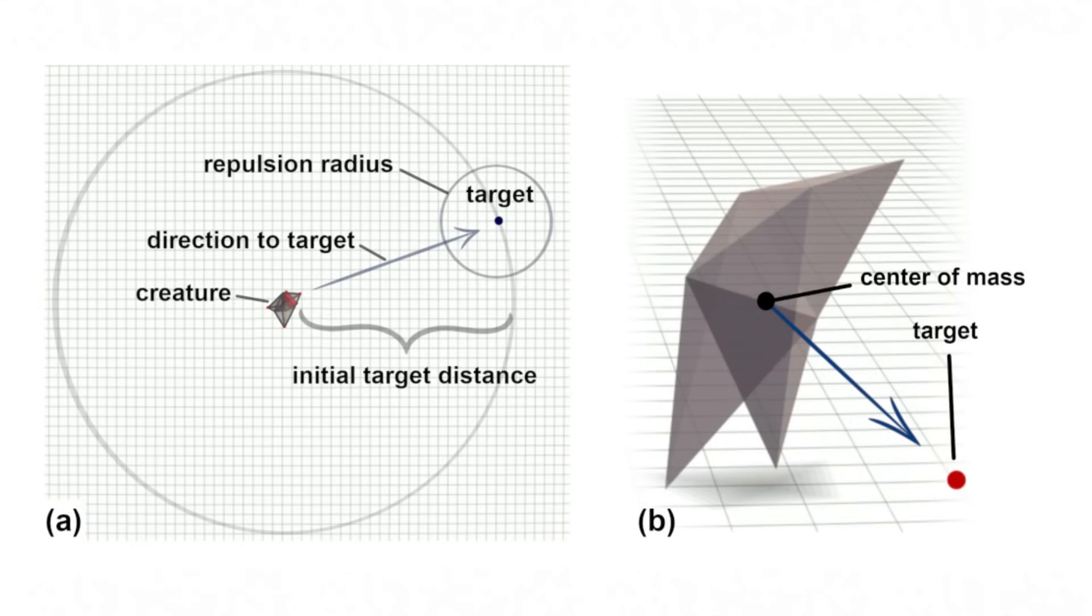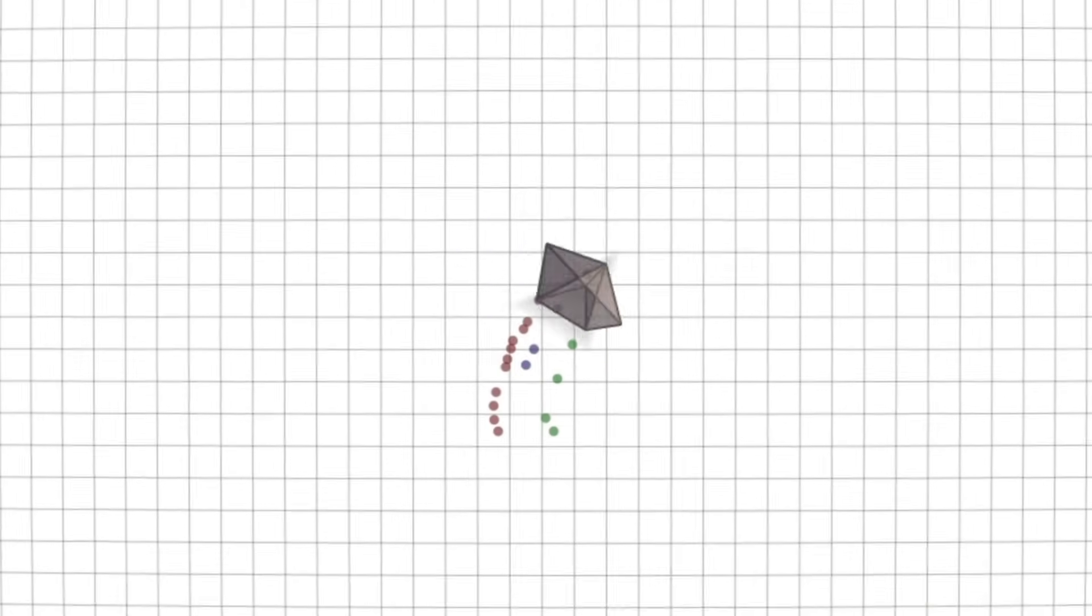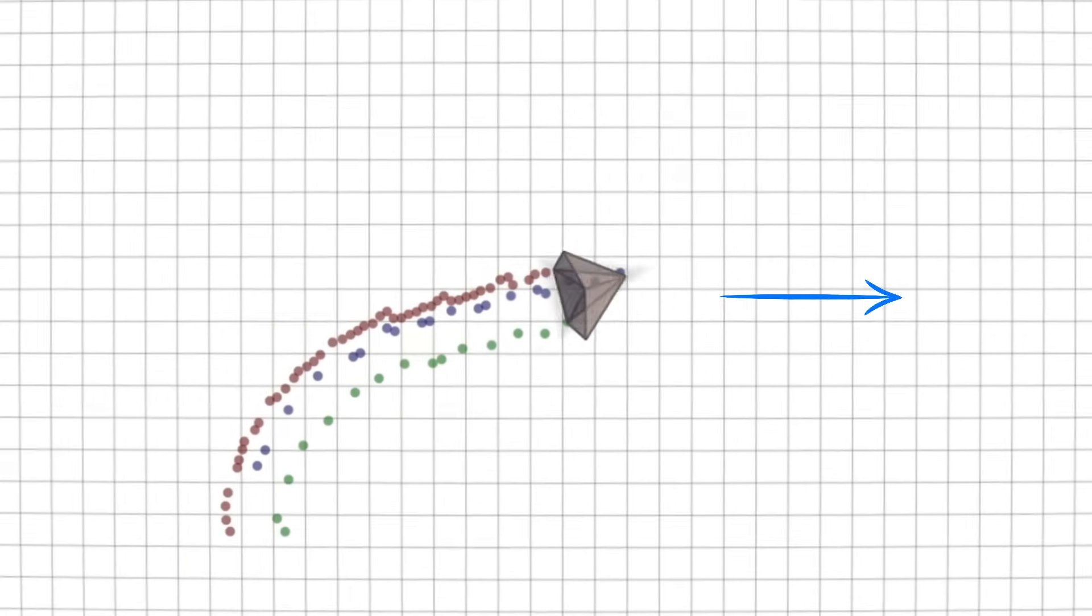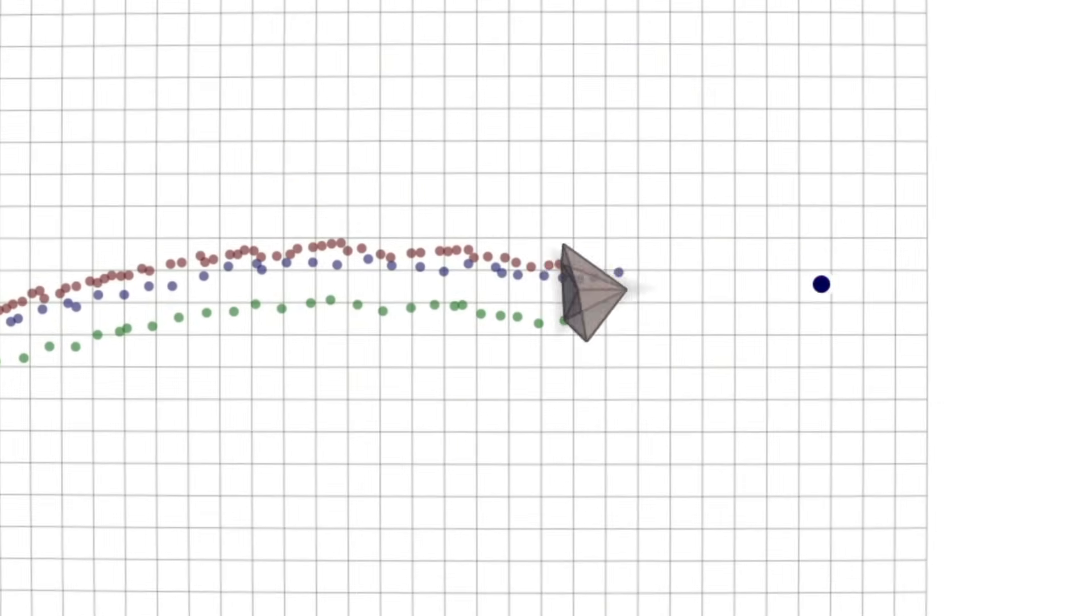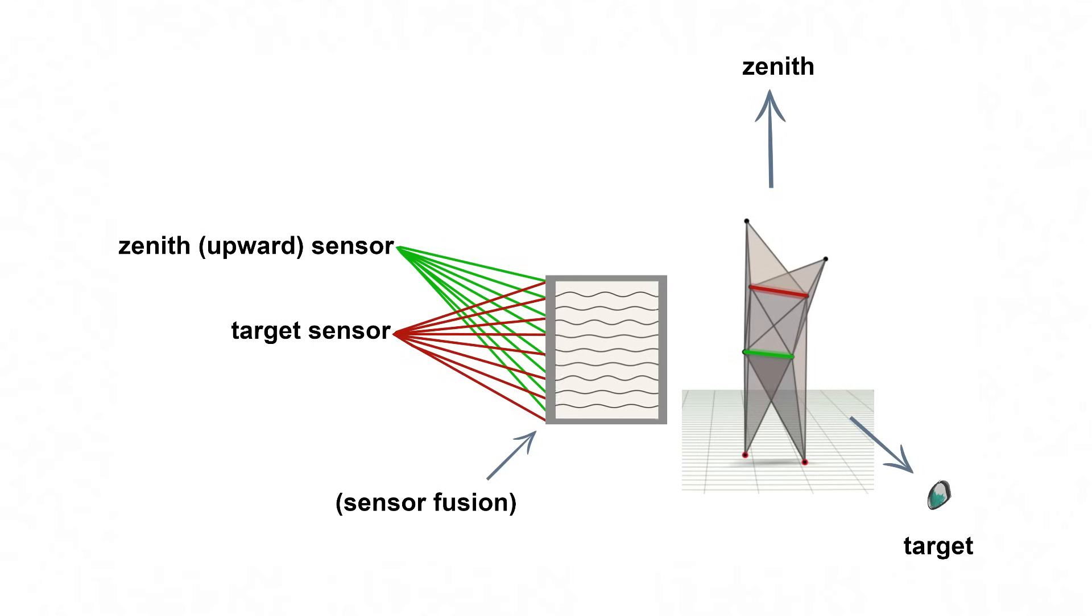Using the same basic idea of a tilt sensor, I can add a target sensor. Instead of using the zenith for sensing the upward direction, it detects the direction to a moving target in the environment. Each sensor is wired up to every spring in the creature and affects the amplitudes and phases of their sine waves. All I have to do is wire them up and the genetic algorithm does the rest.